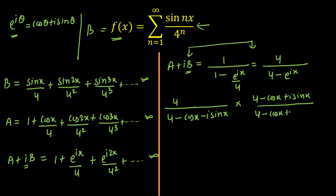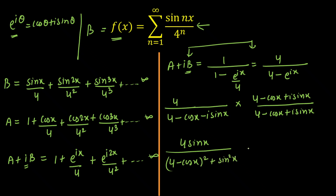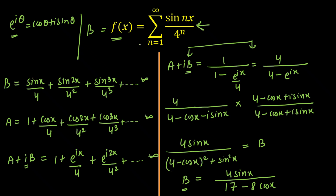Multiplying out, I'm only interested in the imaginary part, which is 4 sin(x) divided by (4 − cos x)² + sin²(x). If we simplify, this equals b. Opening the denominator: 16 plus cos²(x) plus sin²(x) — cos² plus sin² equals 1, so 16 plus 1 is 17 — minus 8 cos(x). So b equals f(x) equals 4 sin(x) / (17 − 8 cos x). This is comparatively the easiest method.